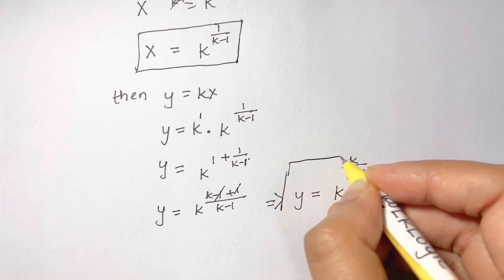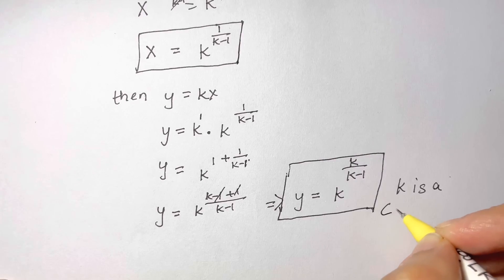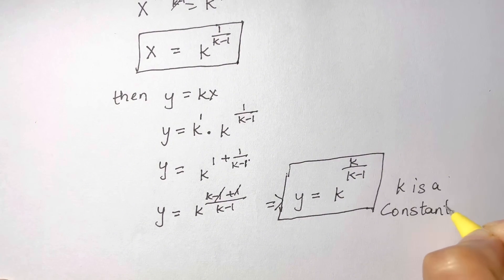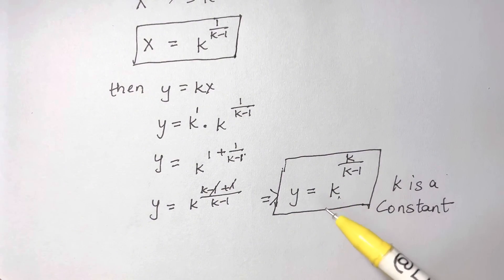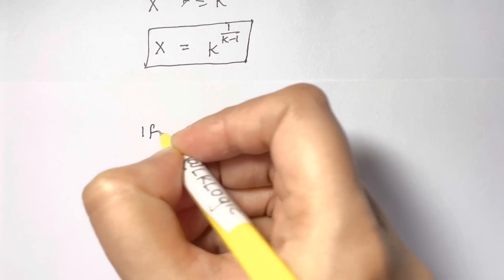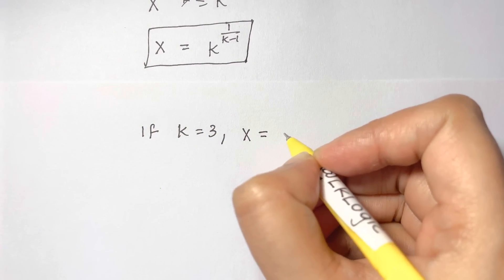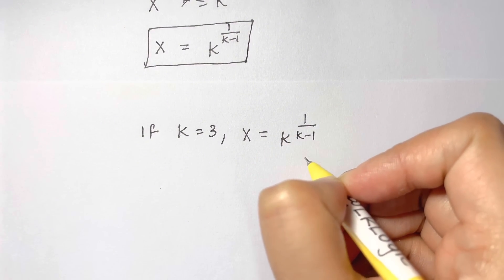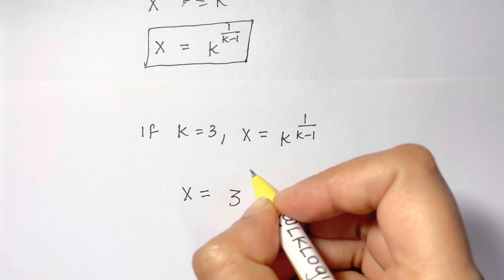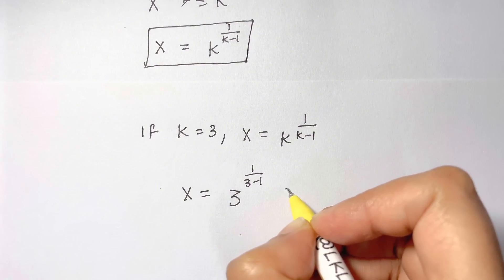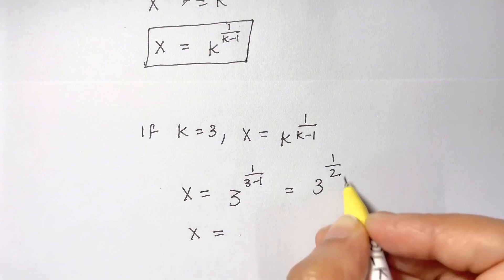So the value of y is k to the power of k over k minus 1, where k is a constant. We now have x and y in terms of k. For example, if k equals 3, then x equals 3 to the power of 1 over 3 minus 1, which is 3 to the power of 1/2, so x equals the square root of 3.